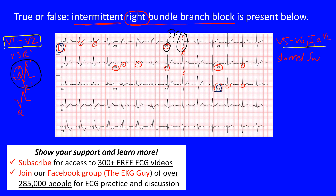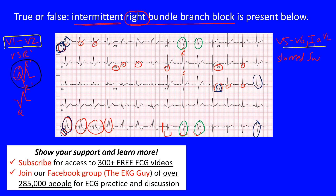Early on in the ECG, in V1, we have RSR prime complexes showing up, and then all of a sudden we see a change to normal complexes. That's why in the V1 lead above we see those initial RSR prime complexes, and in Lead 1 you also see slurred S waves in the early portion but not later, because those later complexes are normal. Looking at AVL, the slurred S waves are present, and below in the rhythm strip we still see those RSR prime complexes - that is right bundle branch block. It's intermittent because it doesn't last throughout.